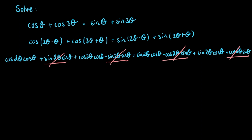We are left with cosine of 2θ·cosθ and cosine of 2θ·cosθ on the left-hand side — they are like terms so I can just go ahead and add those together. Same for the right-hand side. So we get this really nice simplification where it simplifies down to 2cos(2θ)cosθ equals 2sin(2θ)cosθ.